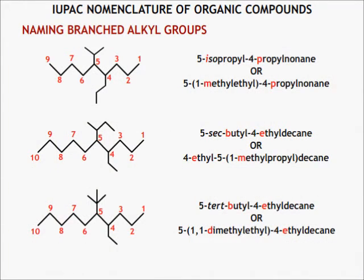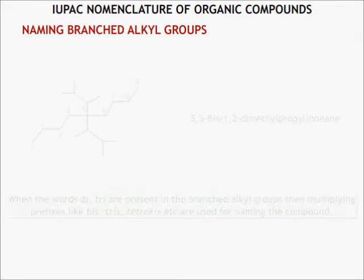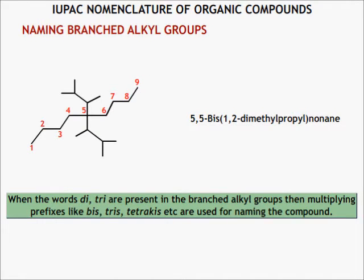When IUPAC names of branched alkyl groups are used, they are written within brackets, and the 'd' of di- is considered for alphabetization. When the words di- or tri- are present within branched alkyl groups, then multiplying prefixes like bis-, tris-, tetrakis-, etc. are used for naming the compound.